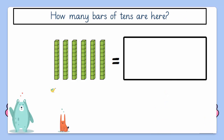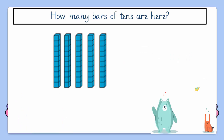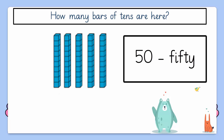Now let's see if you can do this one. How many bars of 10s are here? Can you count and tell? That's right! We have 60 — 6 bars of 10s are equal to 60. How many bars of 10s are here? Fantastic! Now we have 5 bars of 10s which are equal to 50.